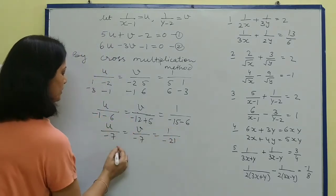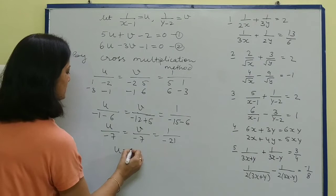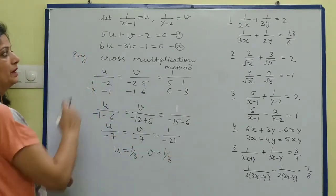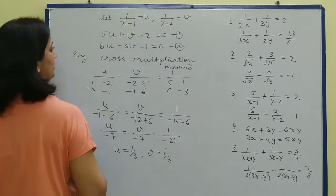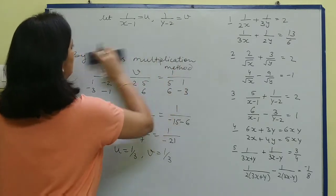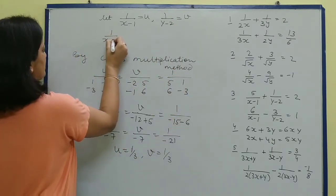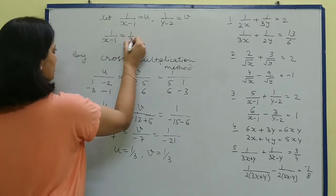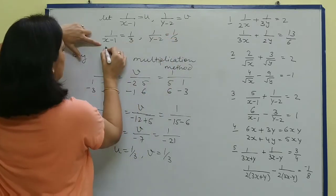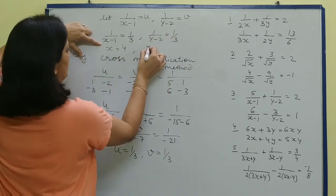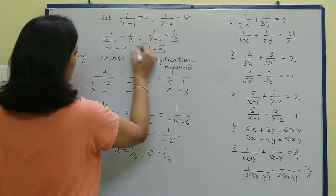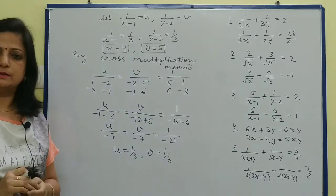Setting these equal: u = -7 upon -21 = 1 upon 3, and v = -7 upon -21 = 1 upon 3. Now putting back the assumed values: 1 upon (x-1) = 1 upon 3, so x - 1 = 3, giving x = 4. And 1 upon (y-2) = 1 upon 3, so y - 2 = 3, giving y = 5. This is our answer.